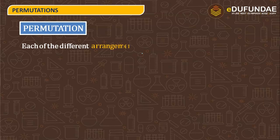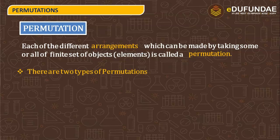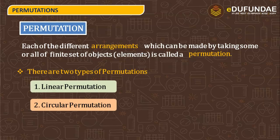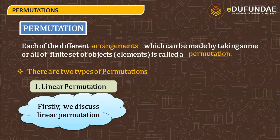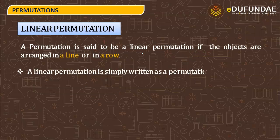Permutation: each of the different arrangements which can be made by taking some or all of a finite set of objects or elements is called a permutation. There are two types of permutation: the first is linear permutation and the second is circular permutation. A permutation is said to be a linear permutation if the objects are arranged in a line or in a row.